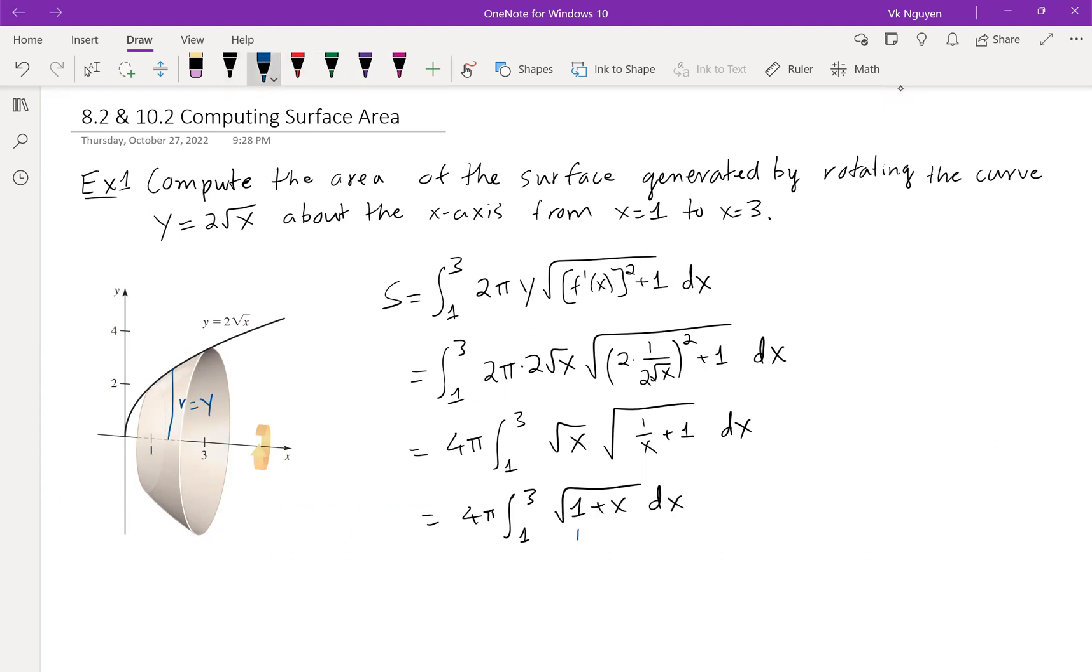And now we can use the u sub. u equals 1 plus x, so du is dx. Then from here we see that the upper limit is 1 plus 3 is 4, the lower limit is 1 plus 1 is 2. So this would be 4 pi integral from 2 to 4 root of u du, which is 4 pi times 2 over 3, u to the 3 over 2, evaluate from 2 to 4.